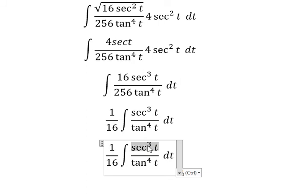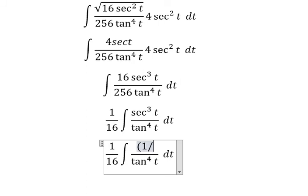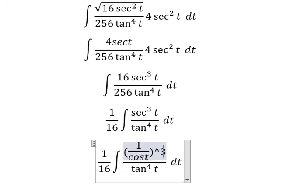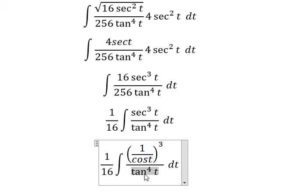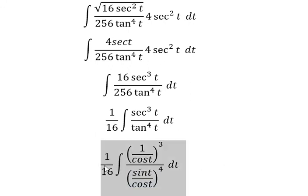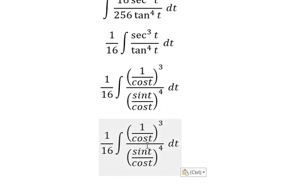We can change sec³(t) into 1 over cos³(t). This can be rewritten as cos(t) over cos⁴(t). Now we simplify cos³(t) in the numerator and denominator.